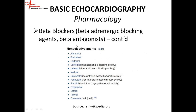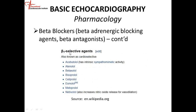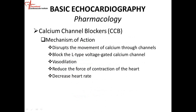Beta blockers are divided into non-selective and selective. Non-selective beta blockers block beta receptors in the heart and elsewhere. Common non-selective agents are carvedilol (Coreg), labetalol, propranolol, and esmolol. Selective beta blockers — beta-1 selective agents — act mainly in the heart, and include atenolol, bisoprolol, and metoprolol. Metoprolol is used most extensively.